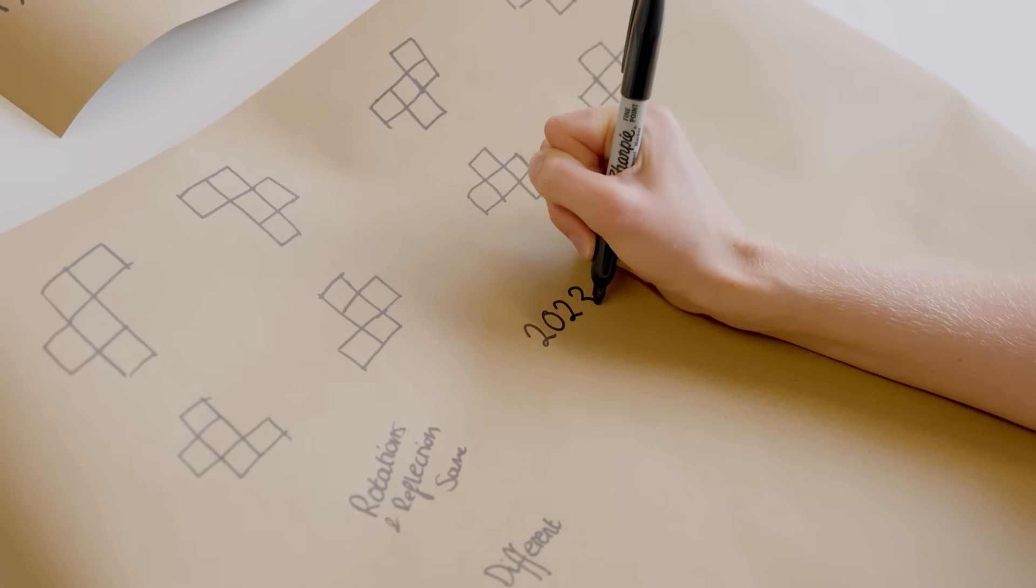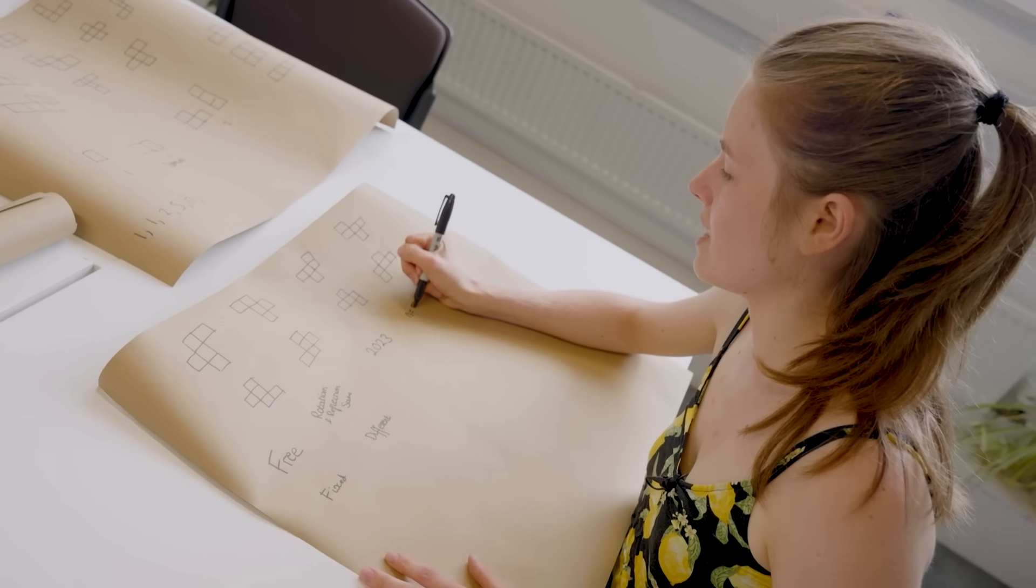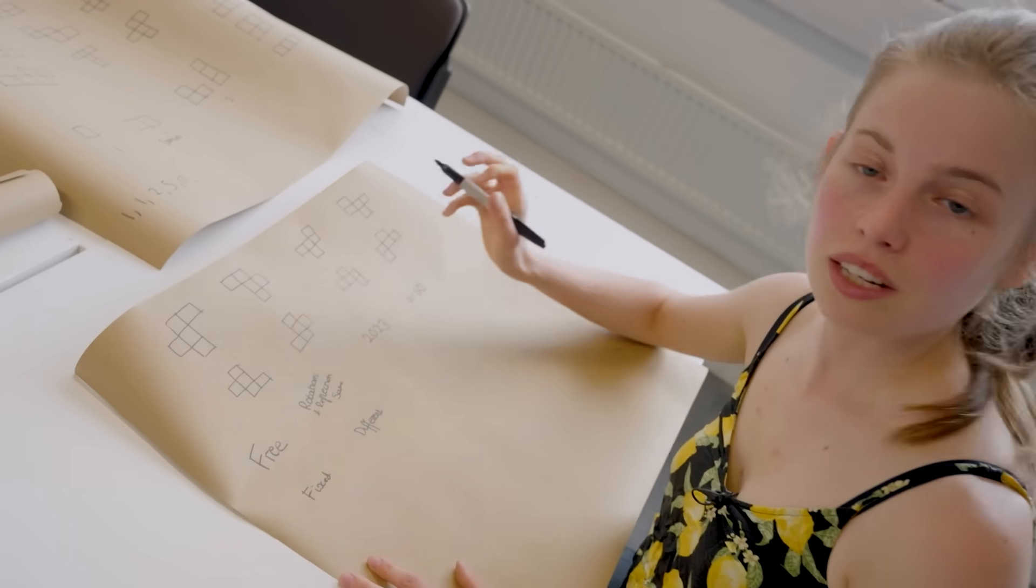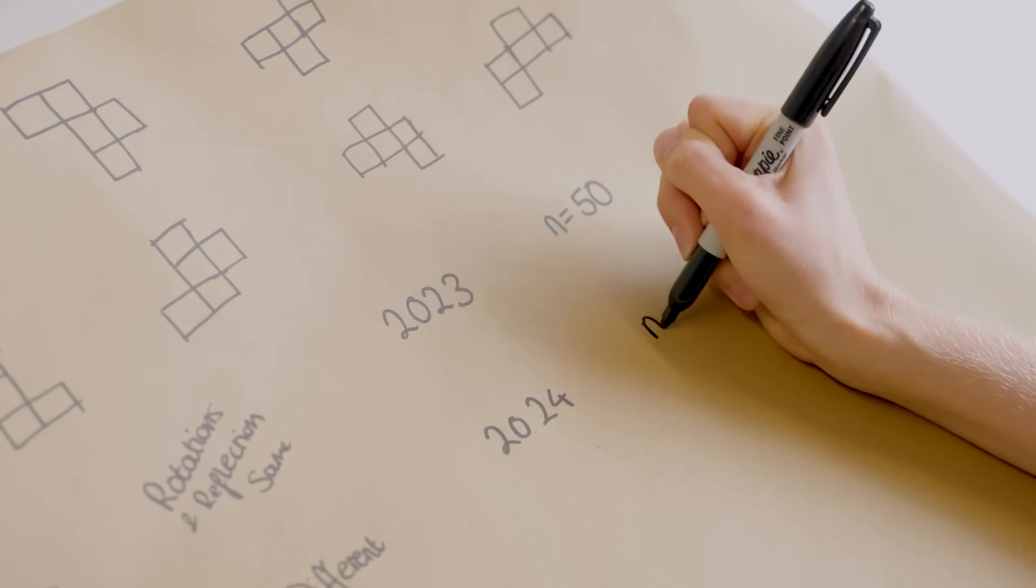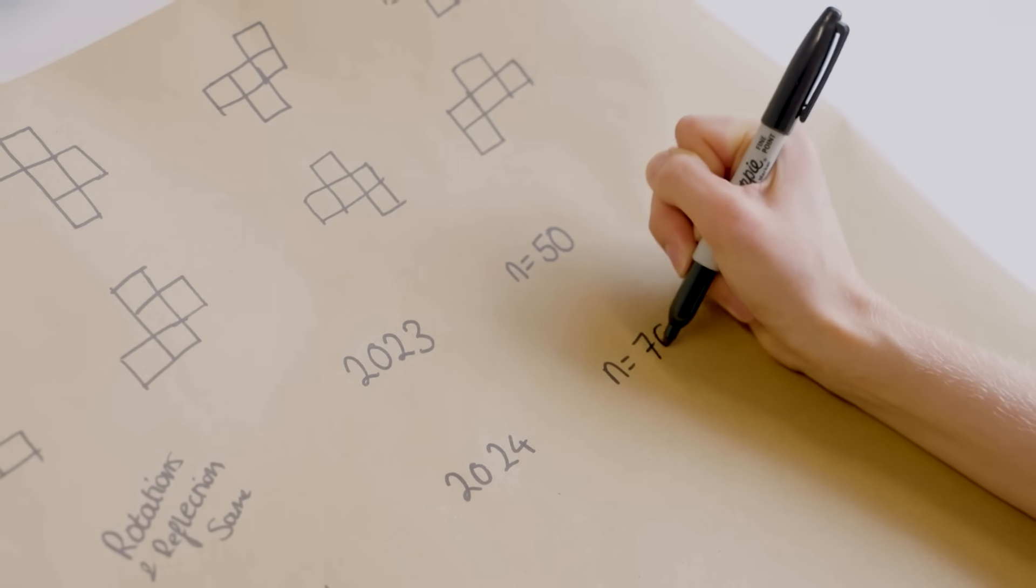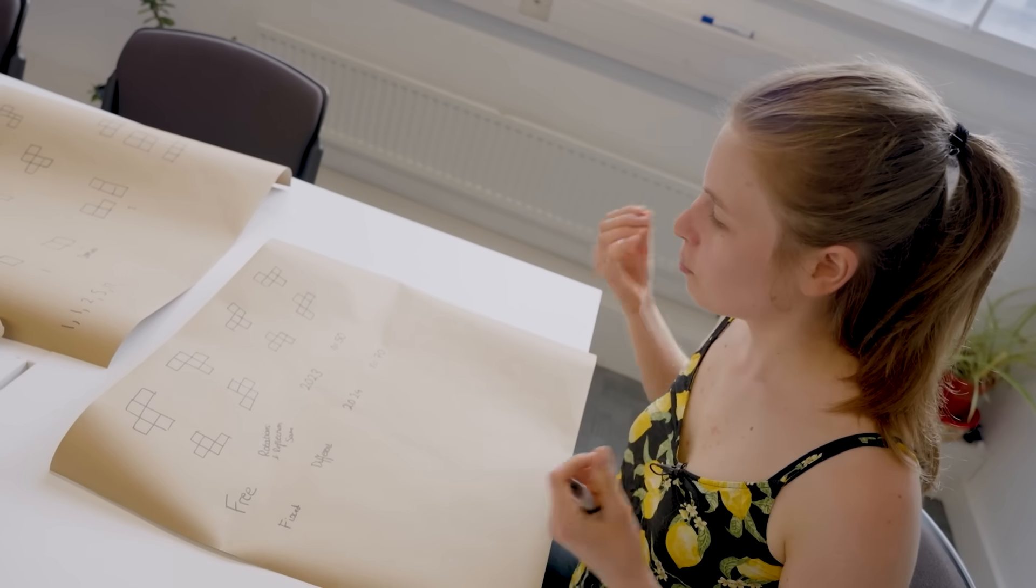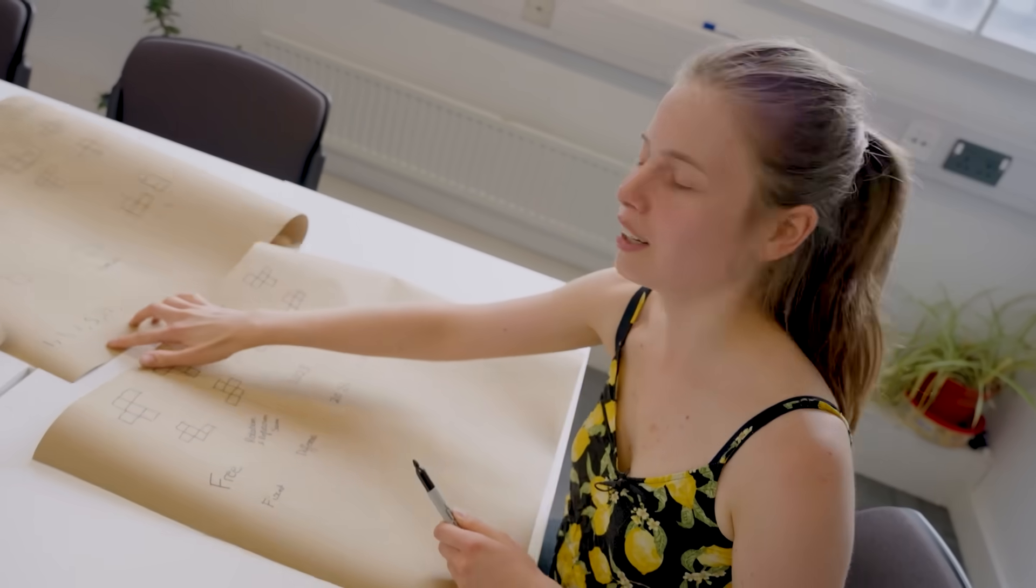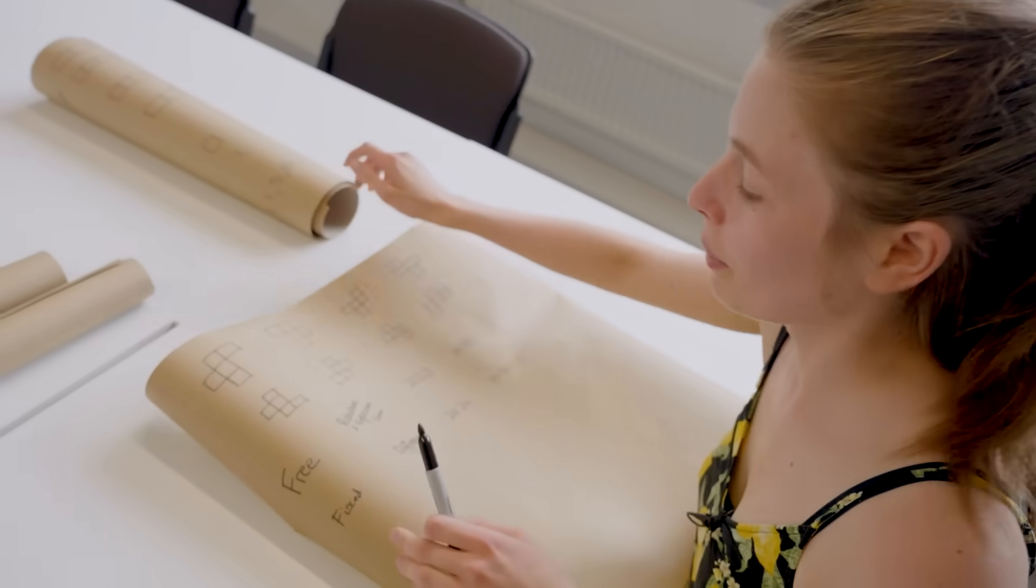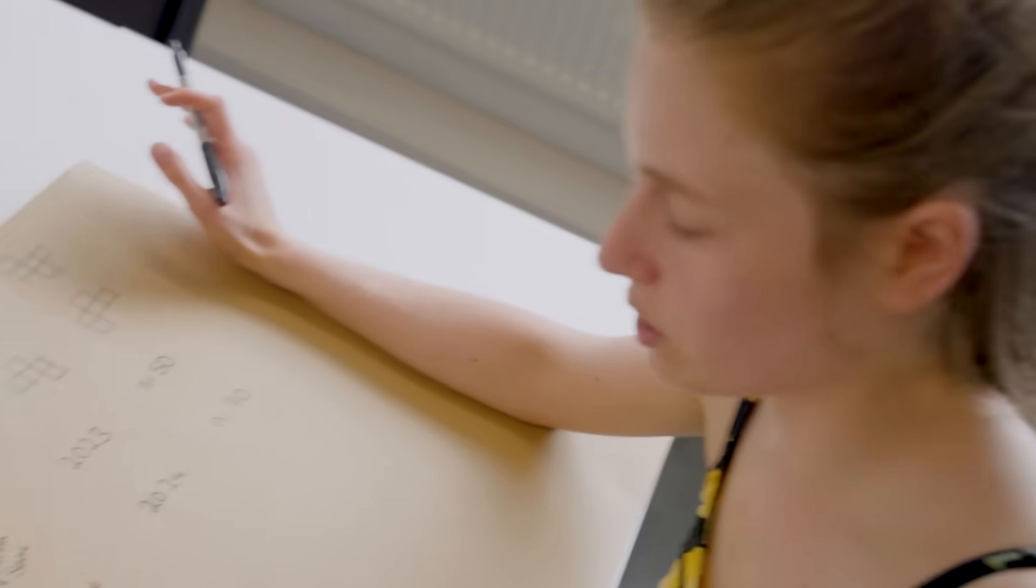So what do we know about them? Well actually in 2023 the free polyominoes were categorized up to n equals 50. So it meant they've all been drawn and mapped out. In 2024 the fixed polyominoes were categorized up to n equals 70. We've categorized up to a certain stage but we don't really have an ongoing formula. There are a few things we do know. So we have some ideas of the asymptotics.